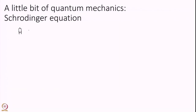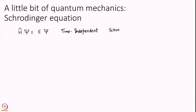The equation I will be looking at today is just one quantum mechanical equation: H psi equals E psi. This equation is called the time-independent Schrödinger equation.